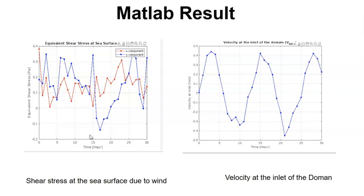Coming to MATLAB, these are the results about the shear stress at the sea surface due to wind and velocity at the inlet of the domain. On the left, we can see the first graph that indicates the variability in X and Y direction component of shear stress, which would be due to the change of wind speed and direction.